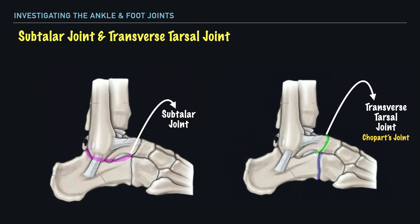It's here at the transverse tarsal, or Chopart's joint, that we have the movements of inversion and eversion taking place. In terms of the degrees of motion, we have approximately 20 to 30 degrees of inversion available and 5 to 15 degrees of eversion available. To classify these joints, we'd say that they are arthrodial joints.